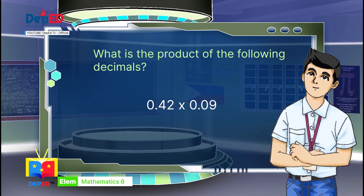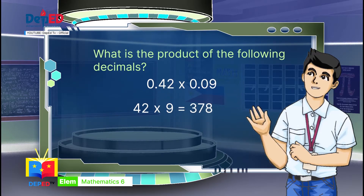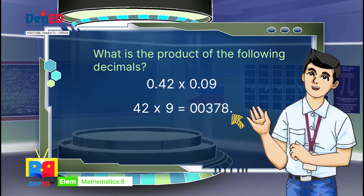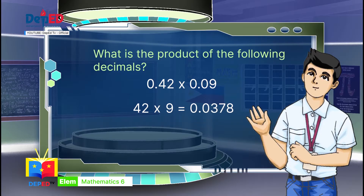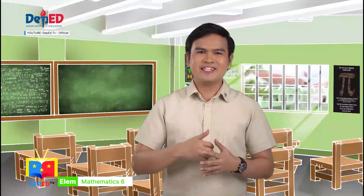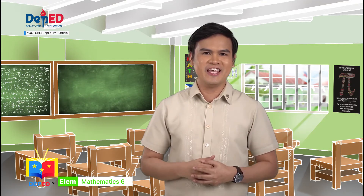For number 3, I multiply 42 to 9 as whole numbers. 42 times 9 equals 378. Then I put the decimal point four places from the right based on the total number of decimal places in the given factors. I inserted 0 to make the correct number of places. So, 42 hundredths times 9 hundredths equals 378 ten-thousandths. Yes, that's correct. Thank you, Mateo, for teaching them the shortest way in multiplying decimals.